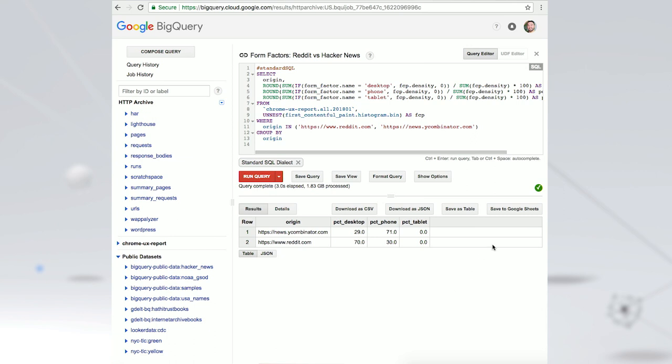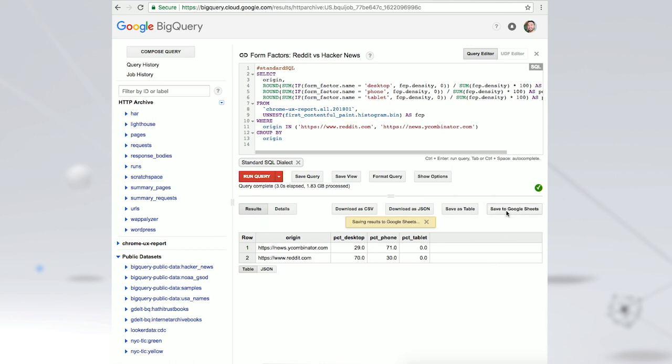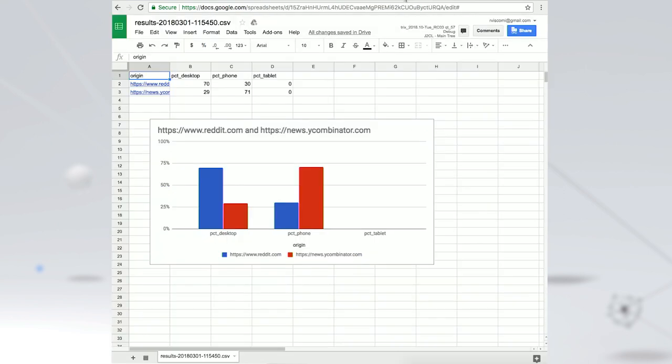Finally, let's use this data to make the comparison even more palpable. BigQuery enables us to export our results to a spreadsheet where we can easily generate a chart. Click Save to Google Sheets, and the results will be transferred automatically. In a single click, we can visualize the raw data into a chart that really brings the form factor differences to life.